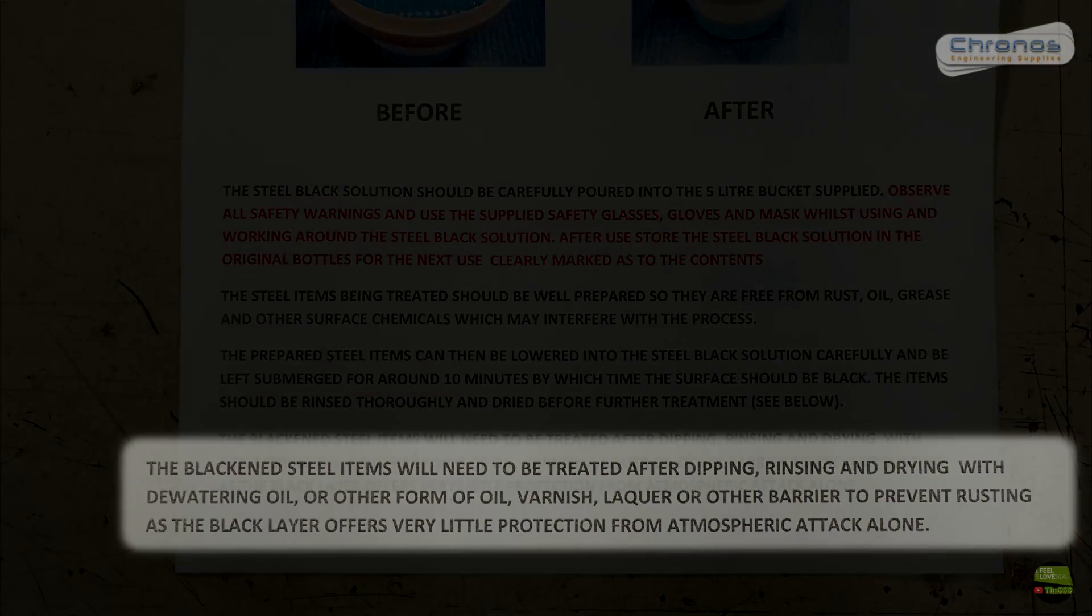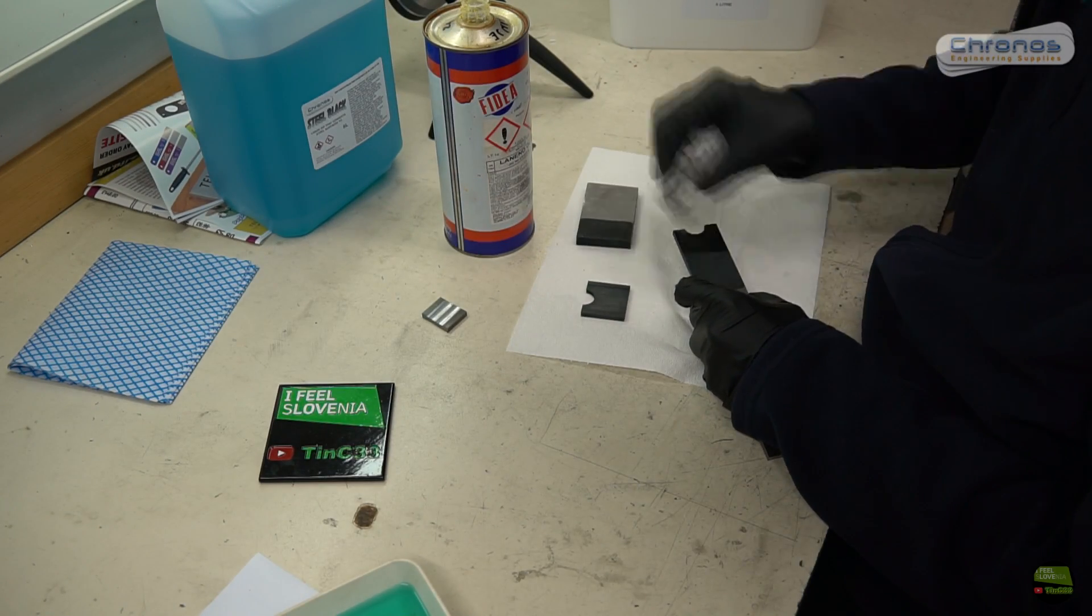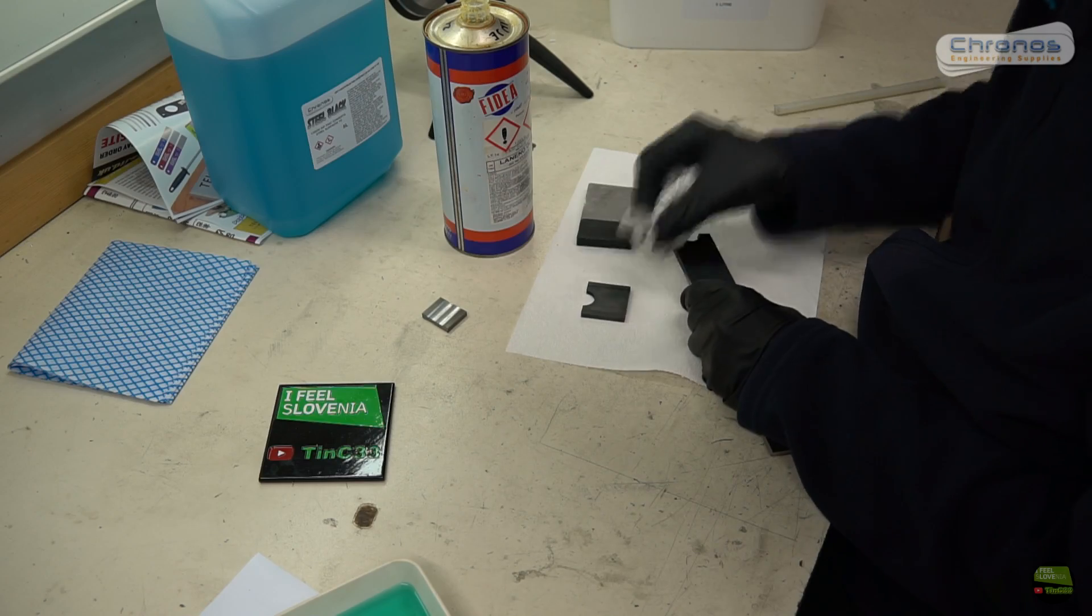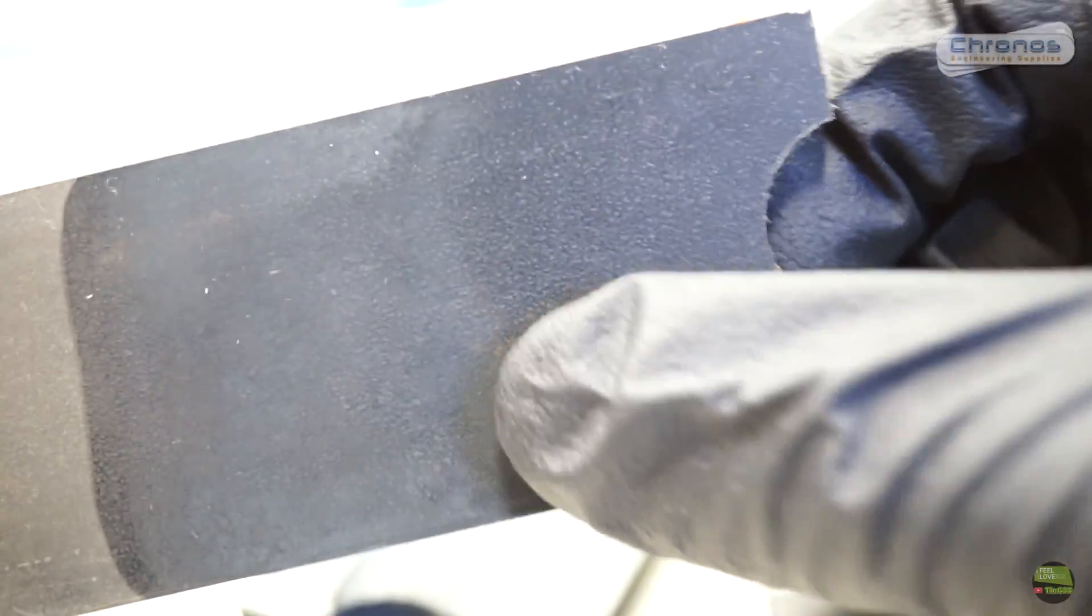When the parts are blackened we need to protect them with watering oil. I just apply a bit of flax seed oil on the towel and wipe the pieces to get a very thin layer of oil. Here we can see the difference with or without oil coating. Next day when the oil is completely dry.